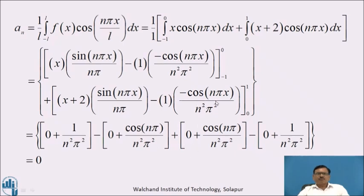For the second part, putting x=1: sin(nπ)=0 so first term is 0; cos(nπ)/(n²π²). Minus lower limit x=0: sin(0)=0; cos(0)=1 gives +1/(n²π²). Combining all terms: 1/(n²π²) - 1/(n²π²) cancels, and -cos(nπ)/(n²π²) + cos(nπ)/(n²π²) cancels. Therefore, aₙ = 0.